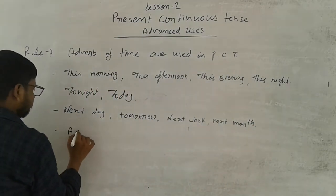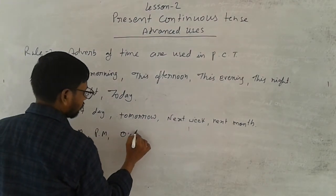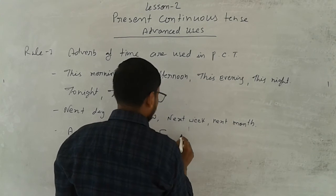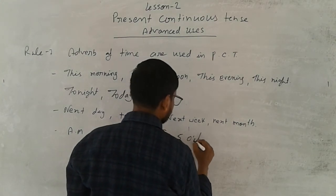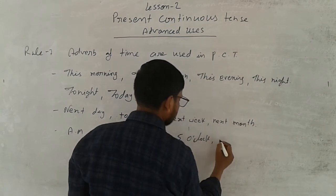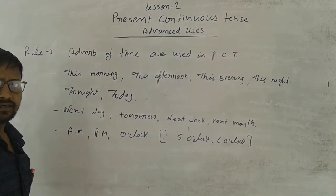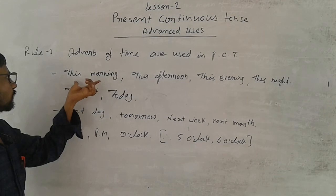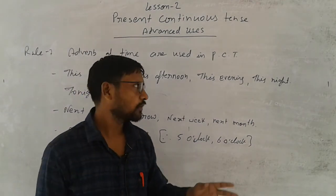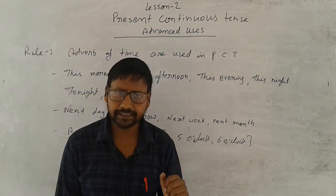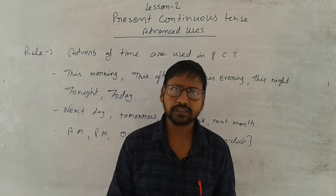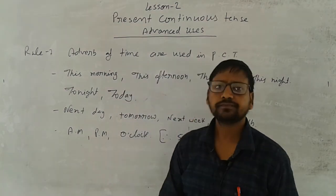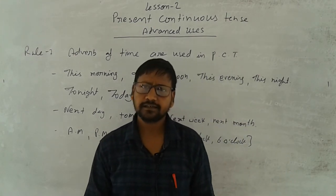Similarly, we can add times like a.m., p.m., or o'clock — such as 5 o'clock, 6 o'clock. So my dear students, you can write examples like: 'I am living in Bansur this morning' or 'She is reaching at 5 o'clock.' You can write these types of examples and understand in a simple way.